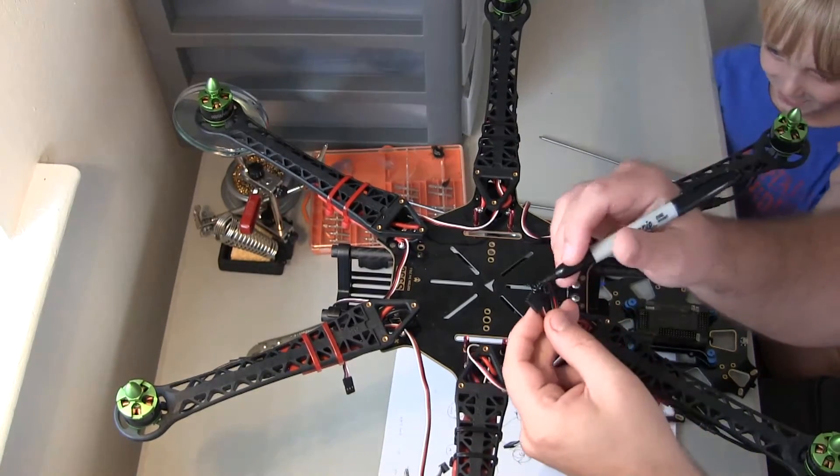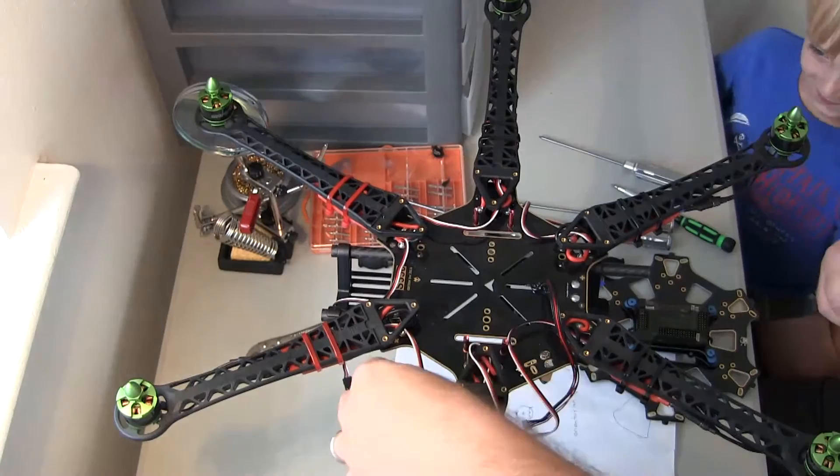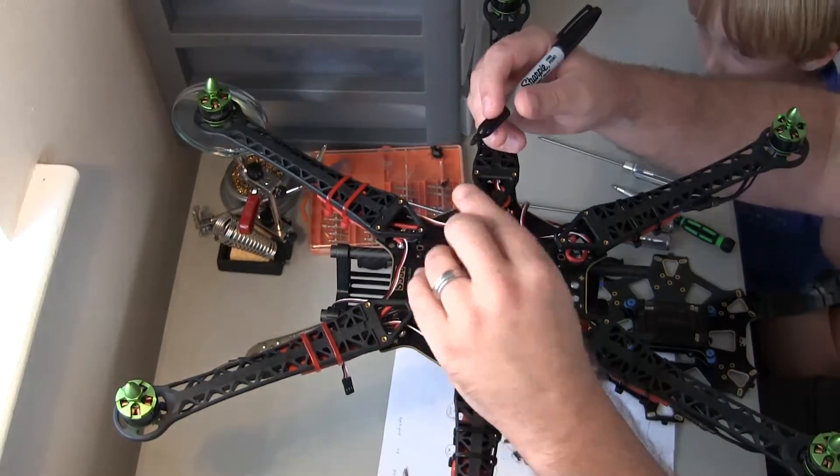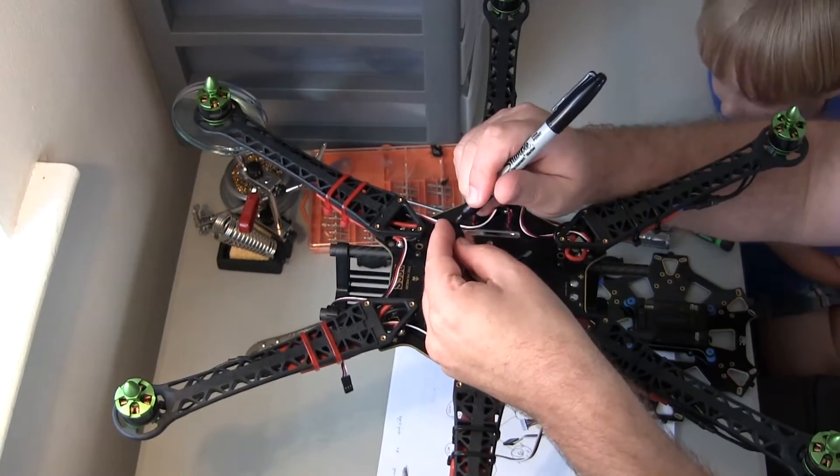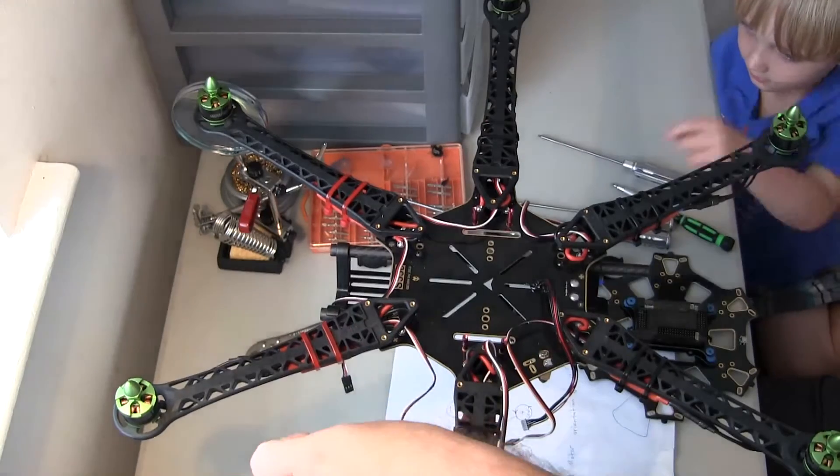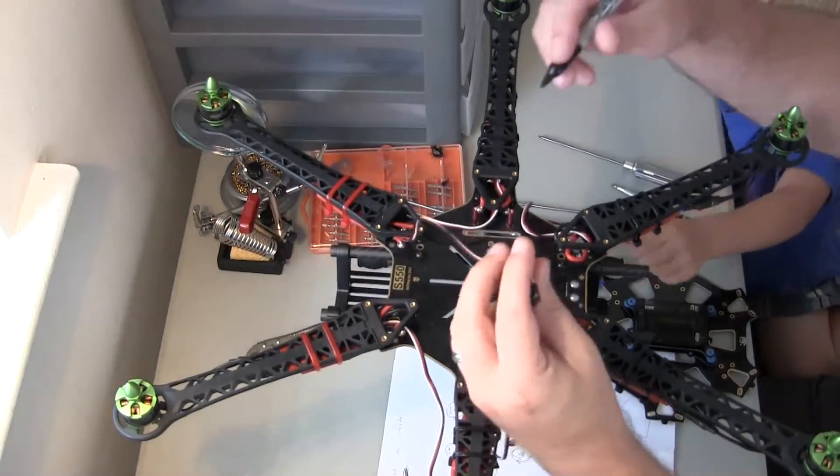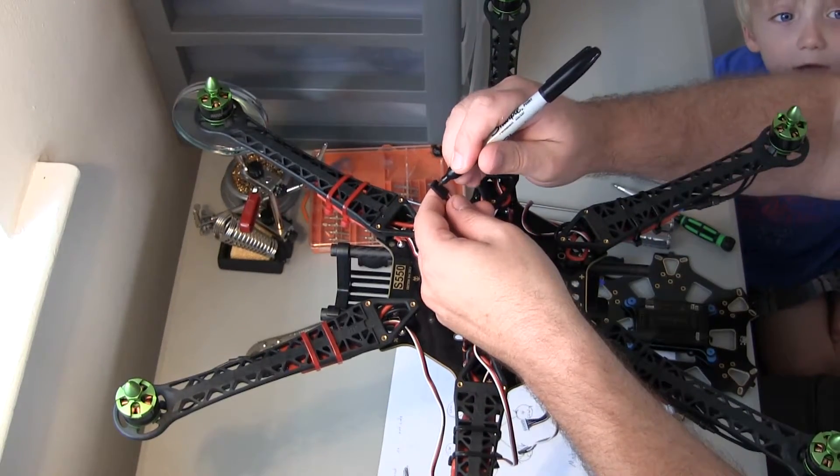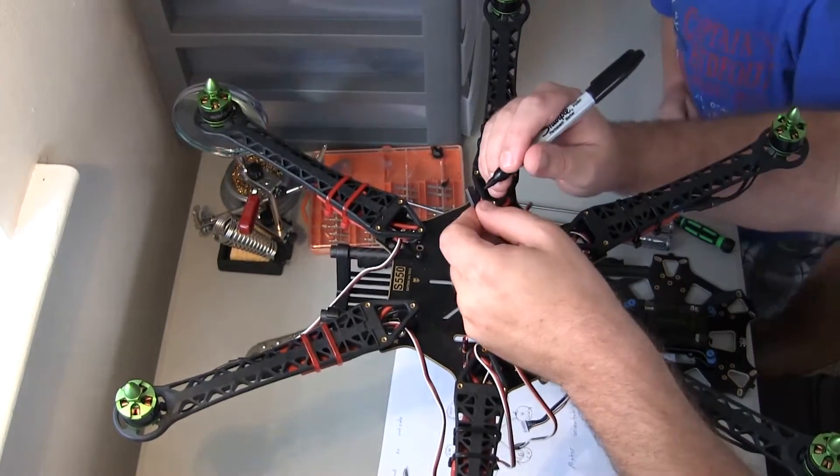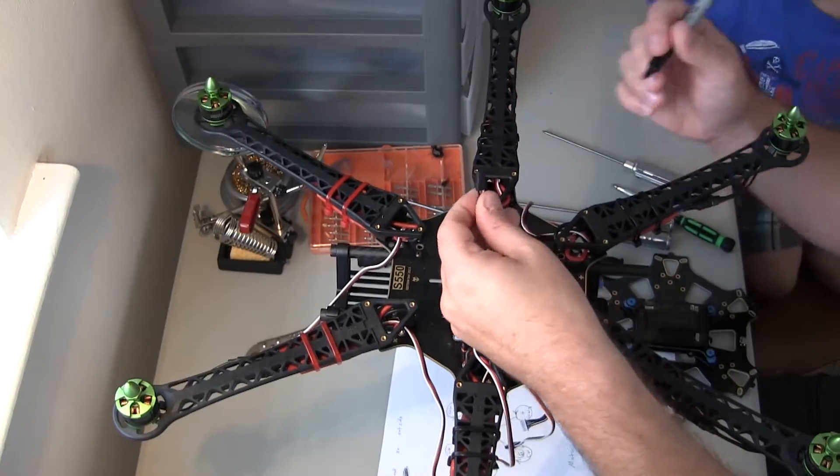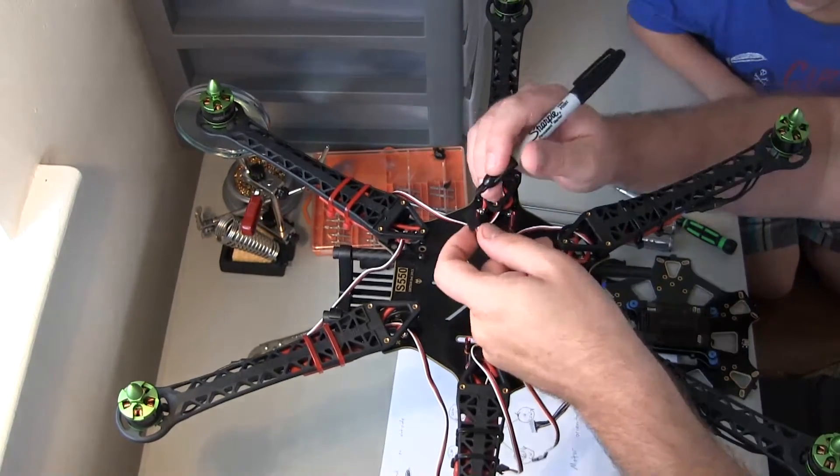You don't want to get these mixed up or it'll just flip over in the air when you're going to fly it. Number 2, it's got white and red and black. Those black things are connectors. Number 5, number 1, number 3, and this would be number 4.